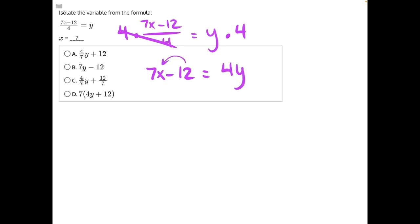Then 12 is being subtracted from x, so the opposite operation is adding 12 to both sides. These will cancel,